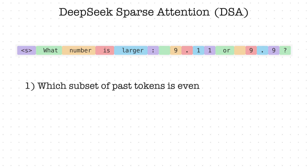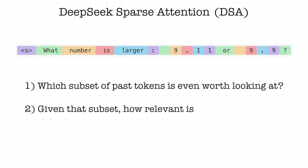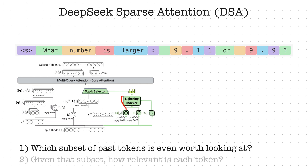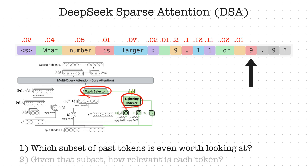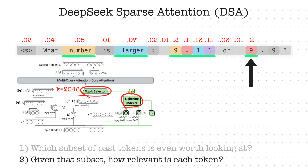They start by asking which subset of past tokens is even worth looking at, and only then ask: given that subset, how relevant is each token to my current query? To answer the first question, they develop two components — the Lightning Indexer and TopK Selector. The Lightning Indexer is basically another small attention mechanism that assigns a score to every previous token, and the TopK Selector then selects K tokens with the highest score. DeepSeek 3.2 always selects 2048 TopK tokens. Once we have that set, only those are passed to the attention block, and we ask the usual relevance question but using only that subset. So this is much faster.